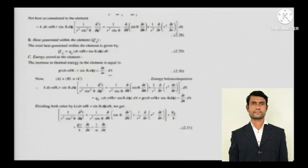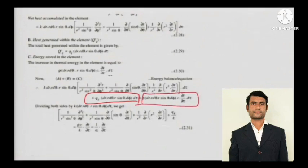Now net heat accumulated in all the directions plus the internal heat that is being stored inside should be equal to the rate of change of internal energy. The same thing has been done. See, this is the heat generated, this is the rate of change of internal energy, and this is the addition of all the net heat. This is the net heat. So what we will do - this goes off, goes off, goes off.